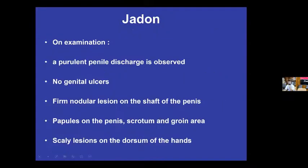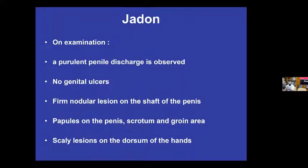When we examined Jaden, we saw a purulent penile discharge. There were no genital ulcers. He had a firm nodular lesion on the shaft of the penis, and papules on the penis, scrotum, and groin. He also had scaly lesions on the dorsum of the hands, lesions in the axillae under the arms, and lesions around the umbilicus.